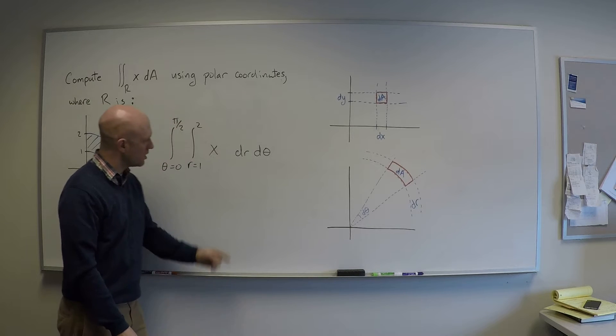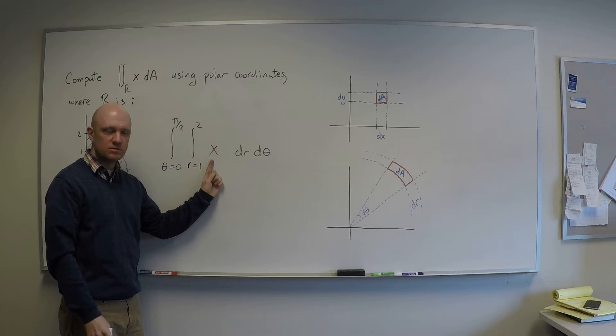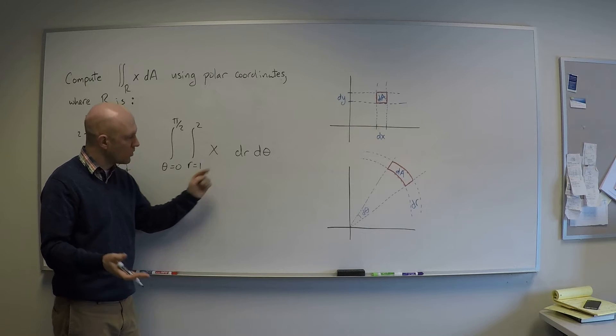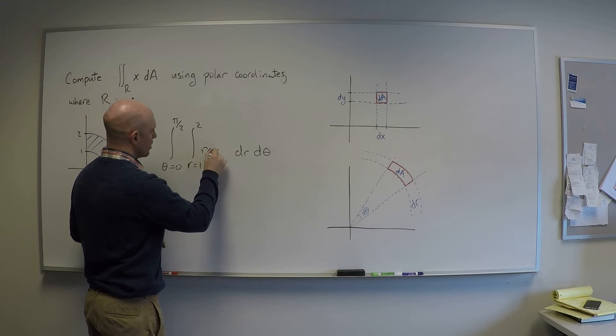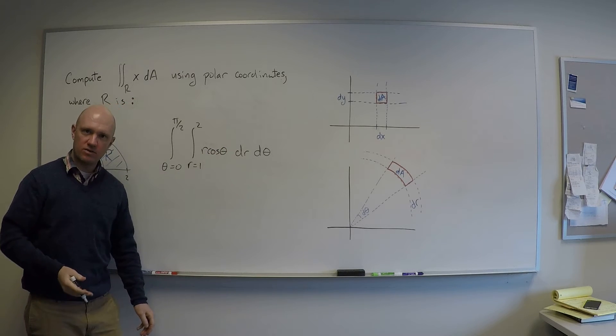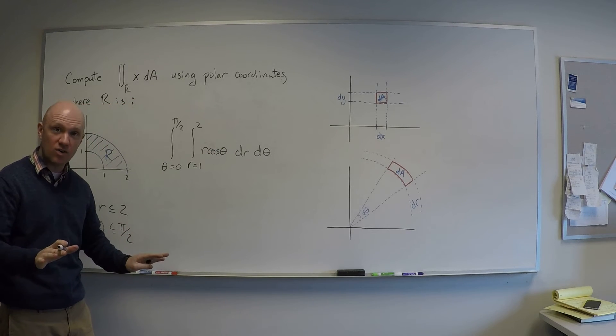You might be a little worried because I've got an x in here. Well x is r cos theta in polar coordinates. So I can just replace x with r cos theta. Done, right? Wrong. This is not correct.